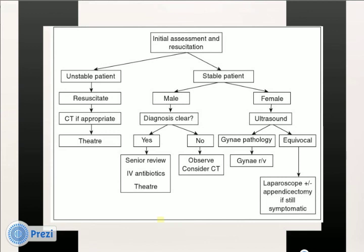Next we move on to management. This algorithm is very helpful for the clerking doctor. The first priority is initial resuscitation and stabilisation using an ABC approach. Unstable patients may proceed directly to CT and theatre if necessary. Stable patients are divided into male and female: men with a clear diagnosis should proceed to diagnostic laparoscopy, while those with a less clear picture may require a period of observation and possible CT. Stable women should be investigated first with a pelvic ultrasound scan; if gynaecological pathology is excluded and symptoms persist, they should also undergo diagnostic laparoscopy.